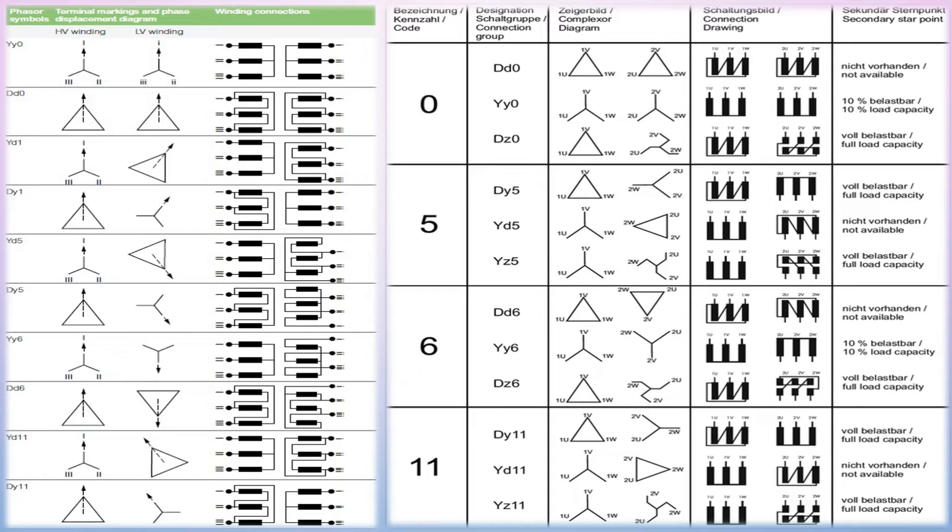The primary windings are connected in one of several ways. The two most common configurations are the delta, in which the polarity end of one winding is connected to the non-polarity end of the next, and the star, in which all three non-polarities or polarity ends are connected together.